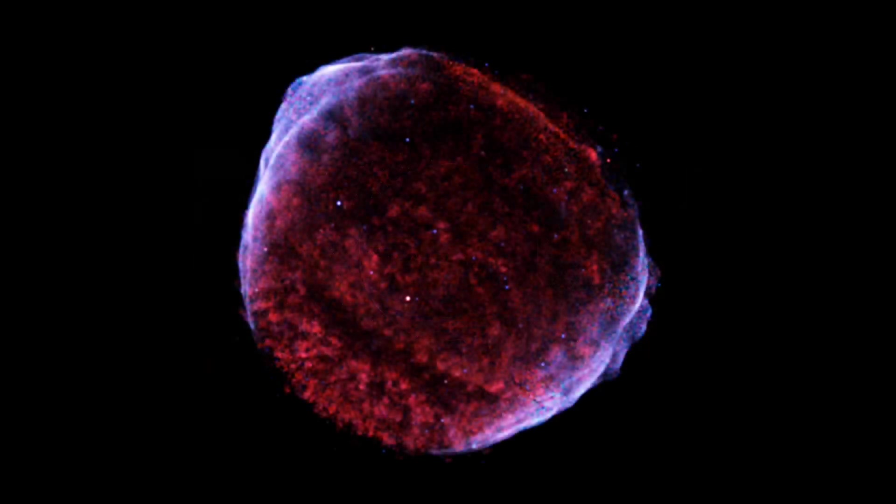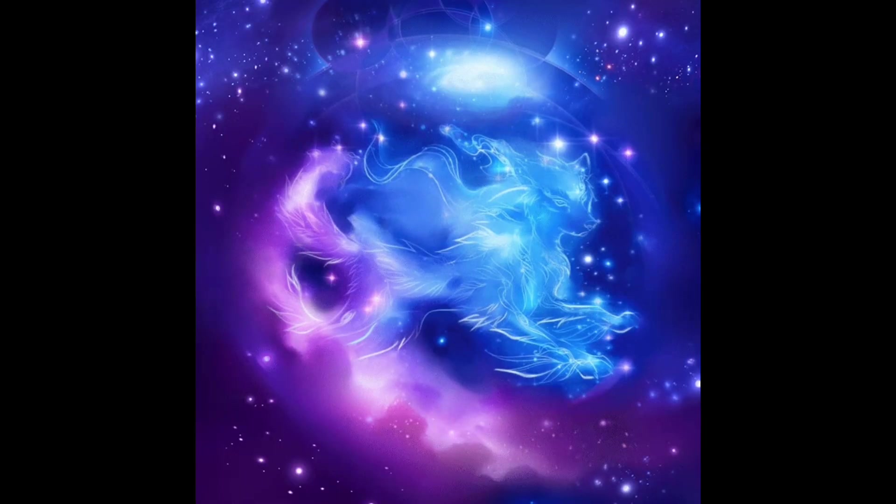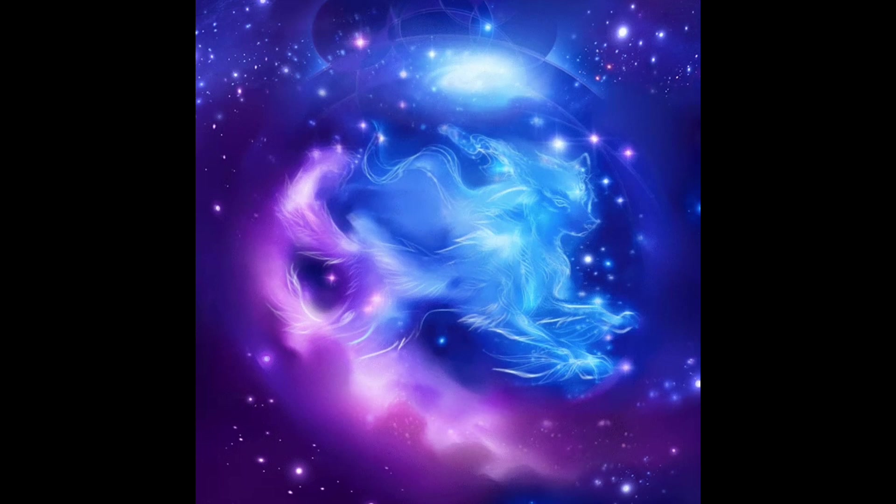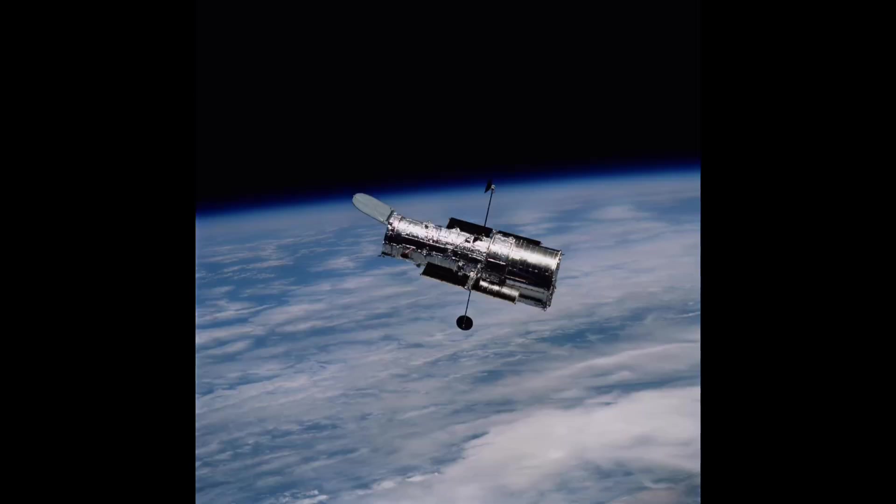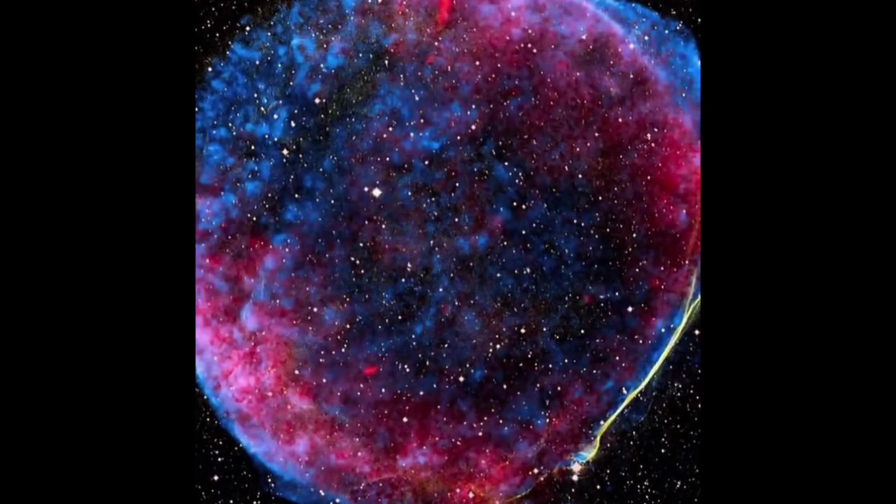In 1006 AD, a supernova called SN 1006 was seen around most of the world for two and a half years before fading away. Located in the constellation Lupus, nowadays we can observe the remnants of the explosion via the nebulous bubble it created surrounding the site of this ancient explosion.